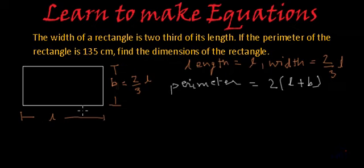Length is appearing two times in the boundary. Perimeter is the boundary of any figure. And breadth is also appearing two times. So perimeter will be two times length plus breadth. They are saying perimeter is 135 centimeters. So 135 centimeters is equal to two times length plus breadth. And what is breadth over here? Breadth is two-third of the length.